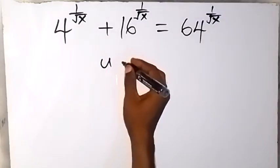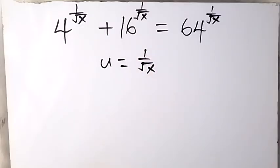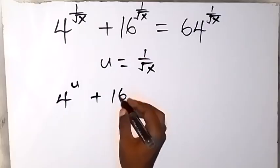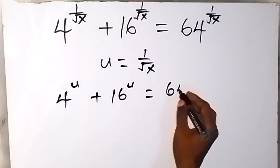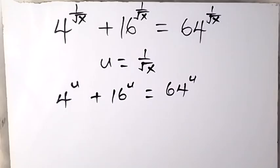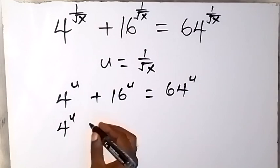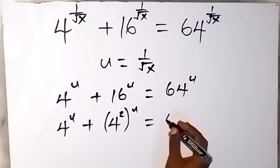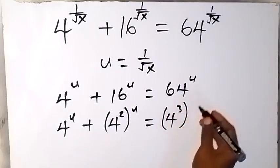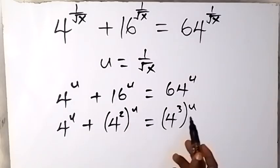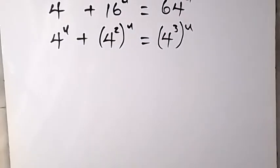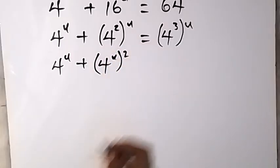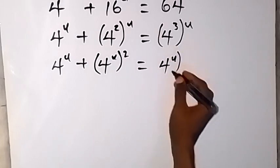We let u be equal to 1 over root x and rewrite the equation as 4 raised to power u plus 16 raised to power u equals 64 raised to power u. We change everything to base 4: 4^u plus 4² raised to power u equals 4³ raised to power u. From the law of indices we rewrite this as 4^u plus (4^u)² equals (4^u)³.